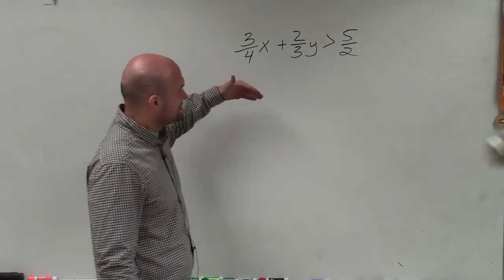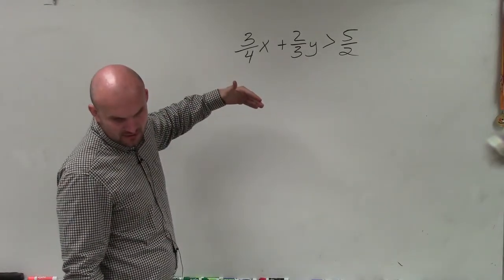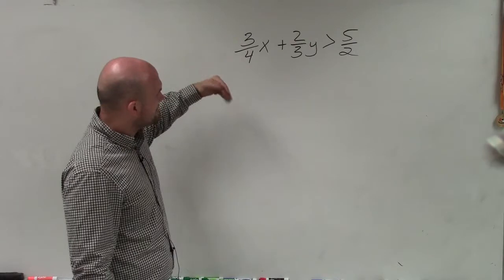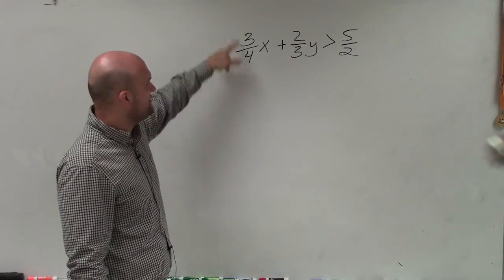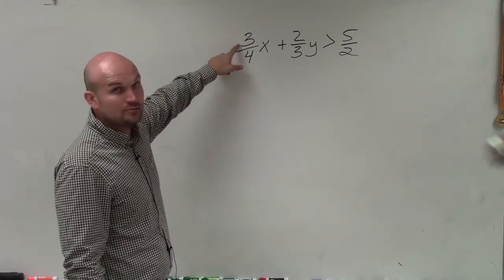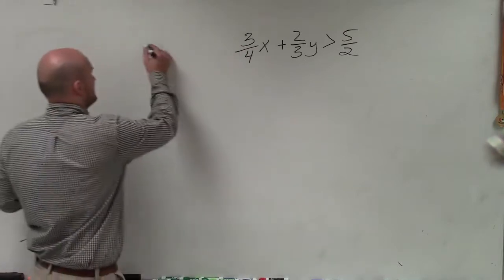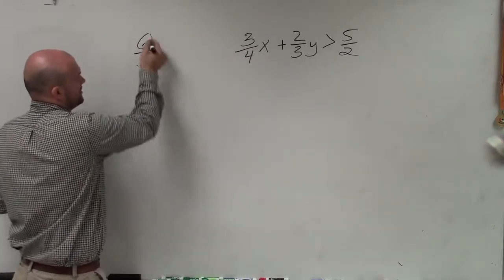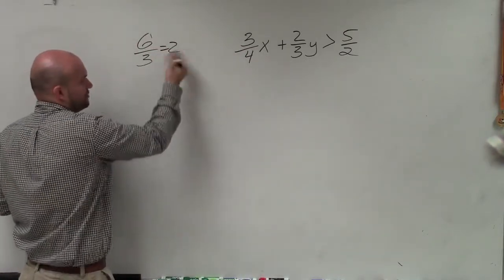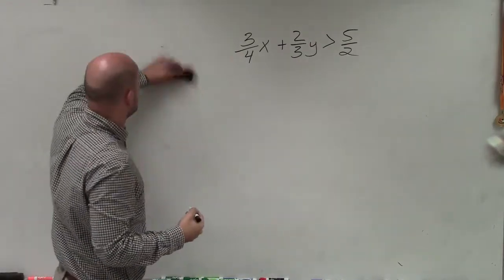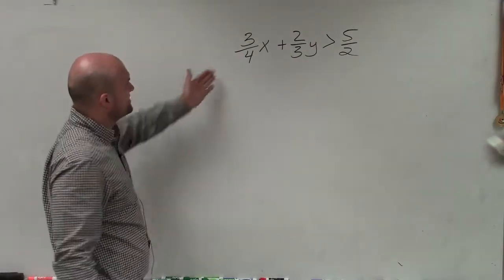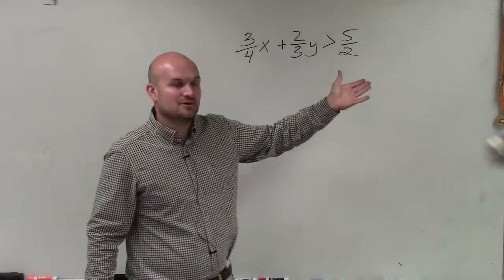Remember, the only reason why we have a fraction is because we have a denominator that evenly does not divide into the numerator. If it did, we could simplify it, right? If we had a fraction 6 thirds, well, 3 goes into 6, so that answer's 2. No more fraction. But when we have fractions, we just have denominators that do not evenly divide into our numerator.